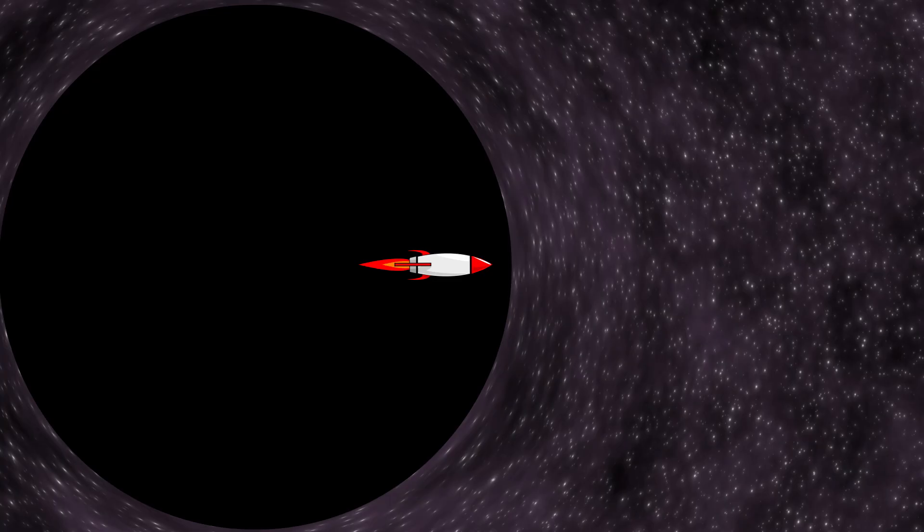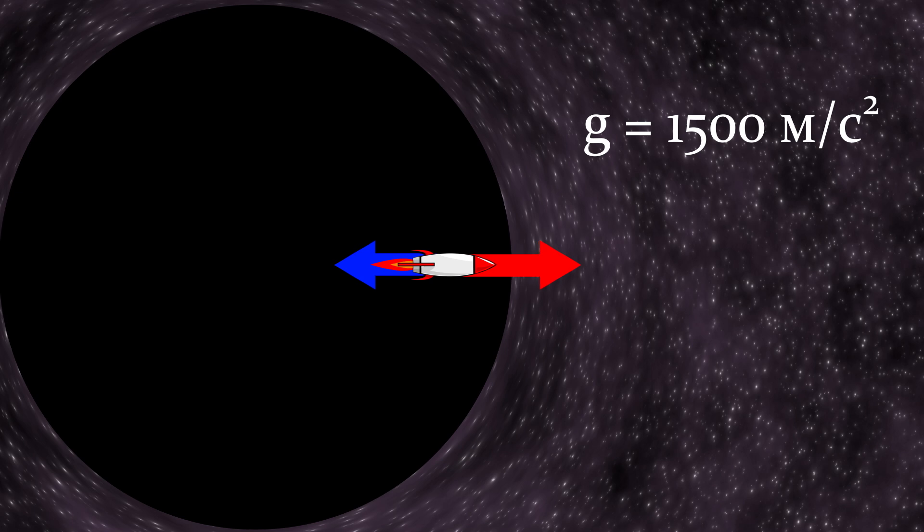Indeed, imagine a rocket located somewhere below the event horizon of the supermassive black hole Sagittarius A-star. Let's assume just below this boundary, where the freefall acceleration is about 1500 meters per second squared, meaning the force with which the black hole would pull each kilogram of the rocket's mass is about 1500 newtons. This is a lot, but not infinitely so. And theoretically, we can imagine an engine developing enough thrust to overcome the black hole's pull. Does this mean that a rocket with such an engine could escape the black hole?